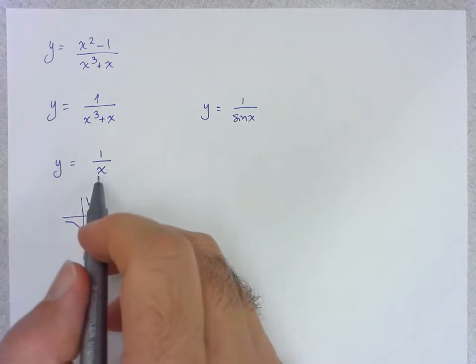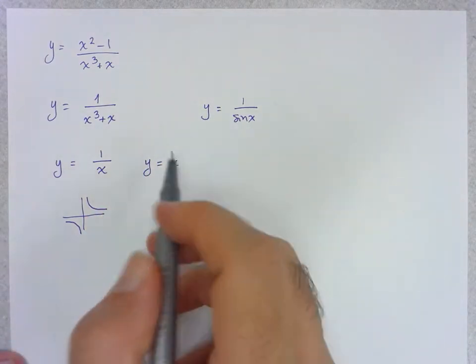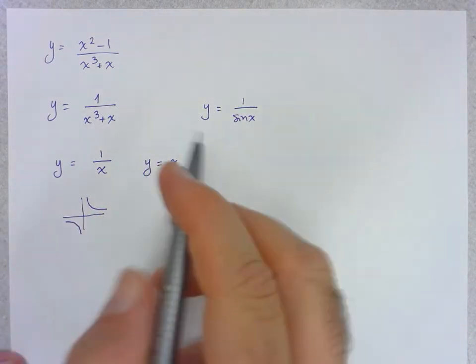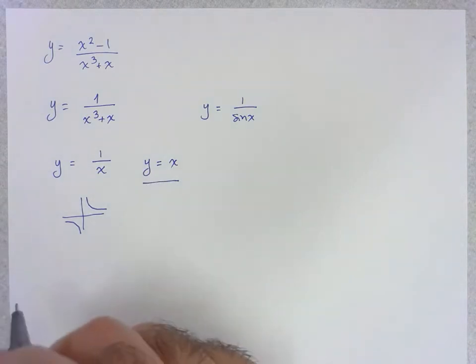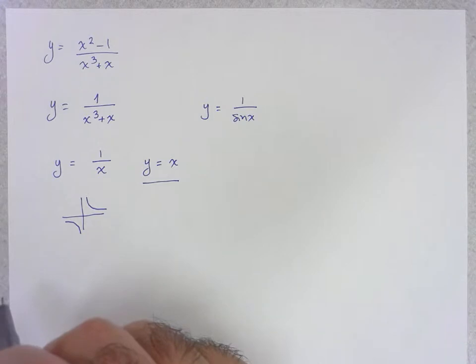So we're going to start by studying this function again except specifically as the reciprocal of the function y equals x. So we're going to try to use information about the function y equals x to determine the major characteristics of the function y equals 1 over x.